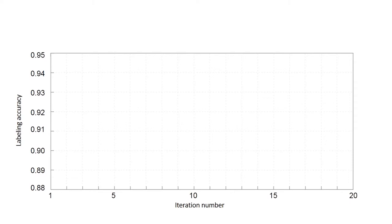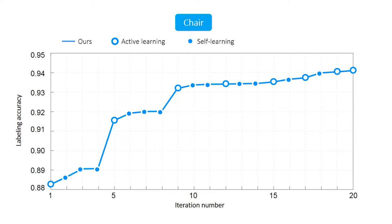To show the effectiveness of our active self-learning for segmentation, take the chair category for example. We show the curve that captures how the labeling accuracy changes as the deep network is trained with more data. Each hollow circle corresponds to one iteration of active learning, while each solid point corresponds to one iteration of self-learning.